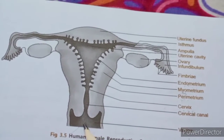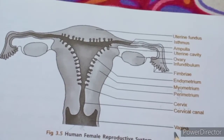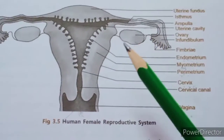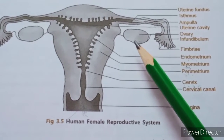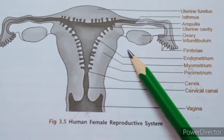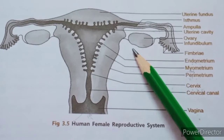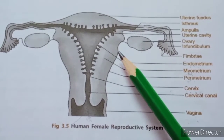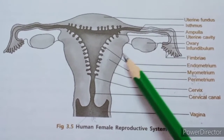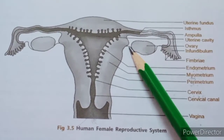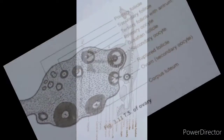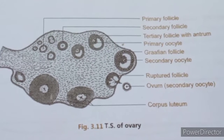The ovaries are called the primary female sex organs, present one on each side of the lower abdomen. They are connected on one side to the pelvic wall (the hip wall) and on the other side to the uterus with the help of muscles called ligaments.